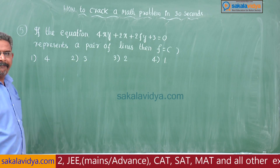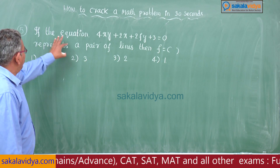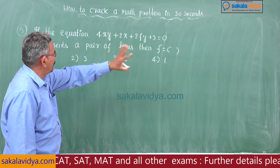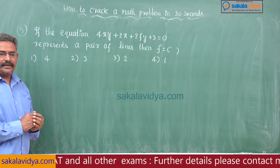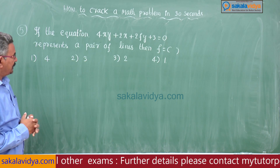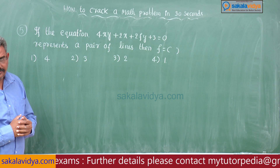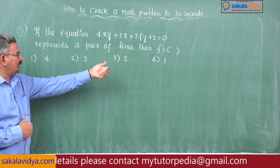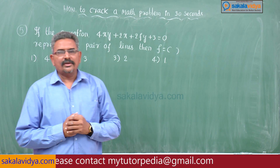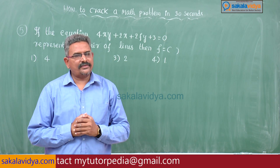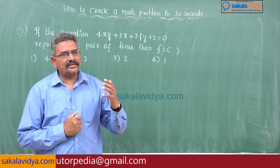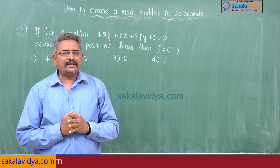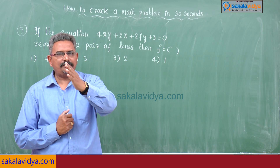Fifth problem: if the equation 4xy + 2x + 2fy + 3 = 0 represents a pair of lines, then f equals what? First option 4, second option 3, third option 2, fourth option 1. Since it represents a pair of straight lines, we apply the condition: abc + 2fgh - af² - bg² - ch² = 0.